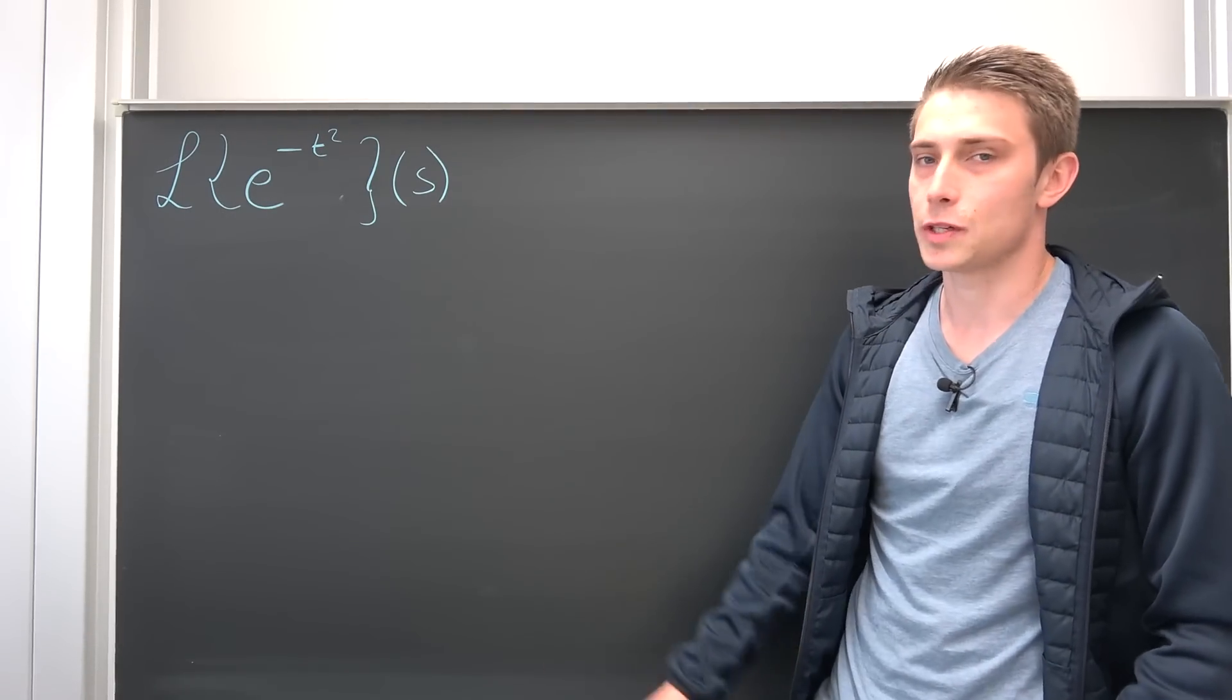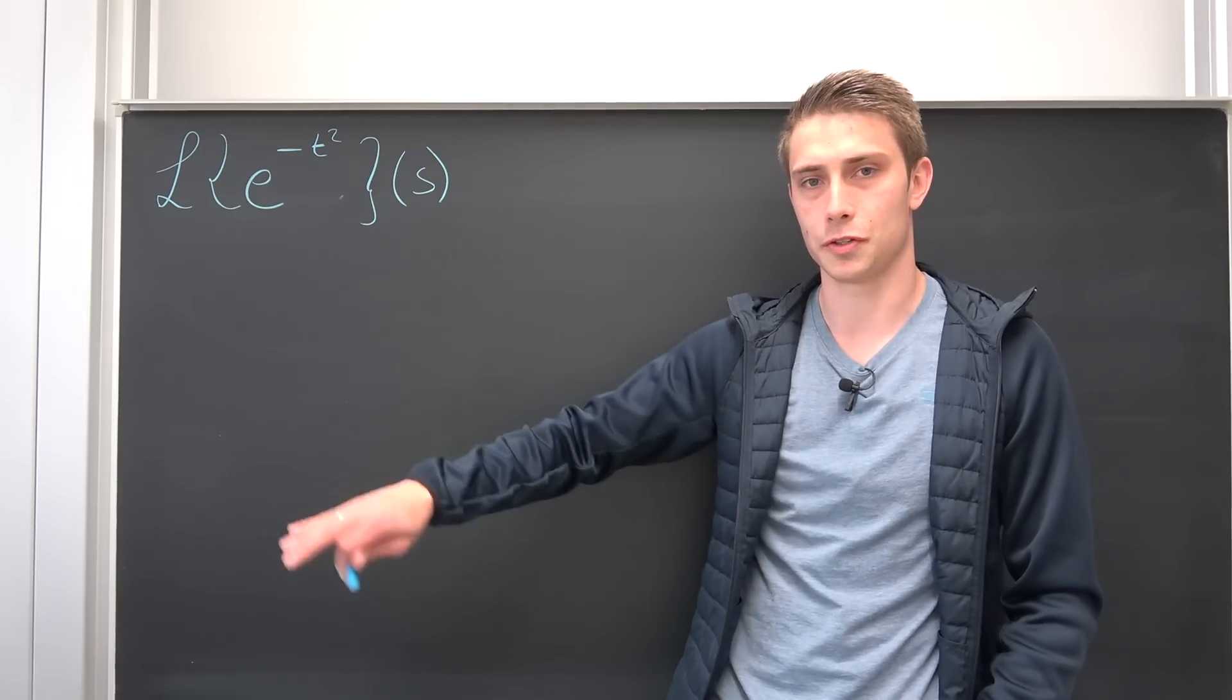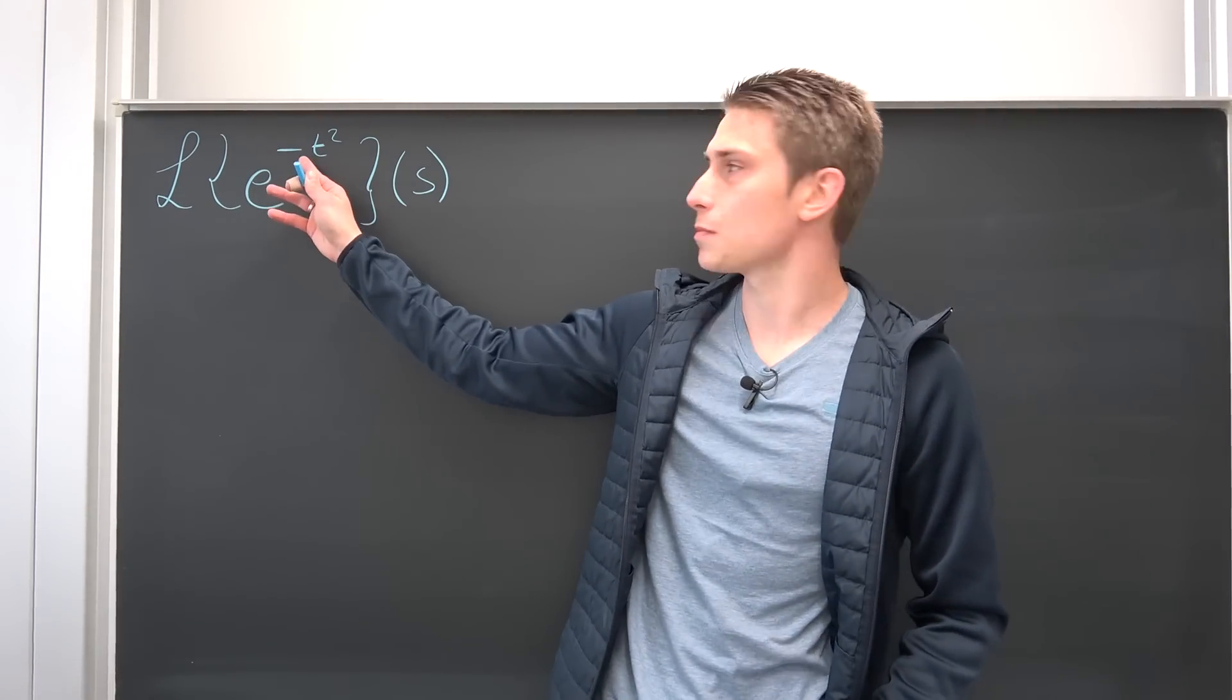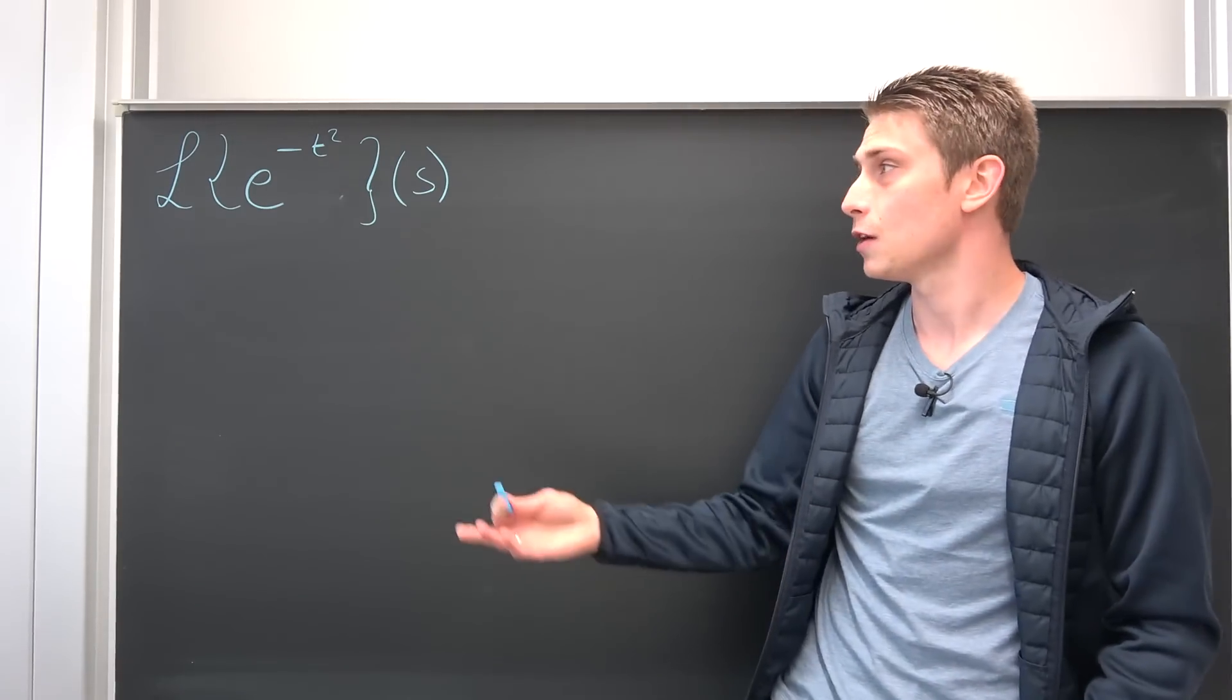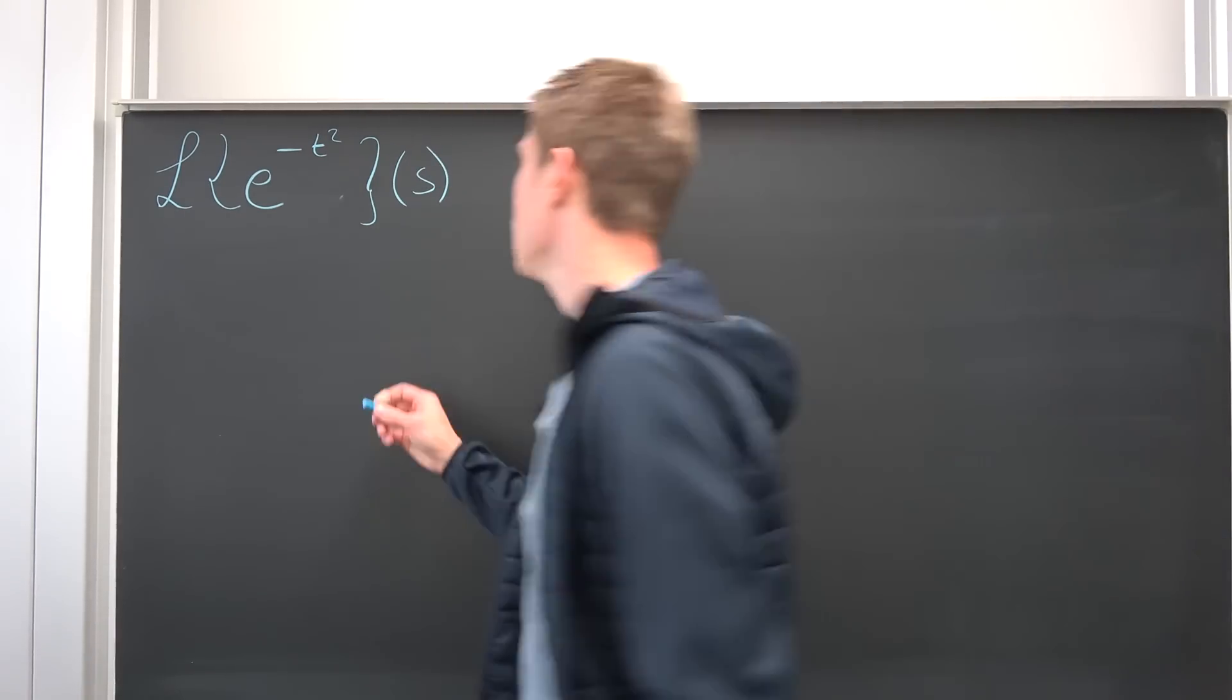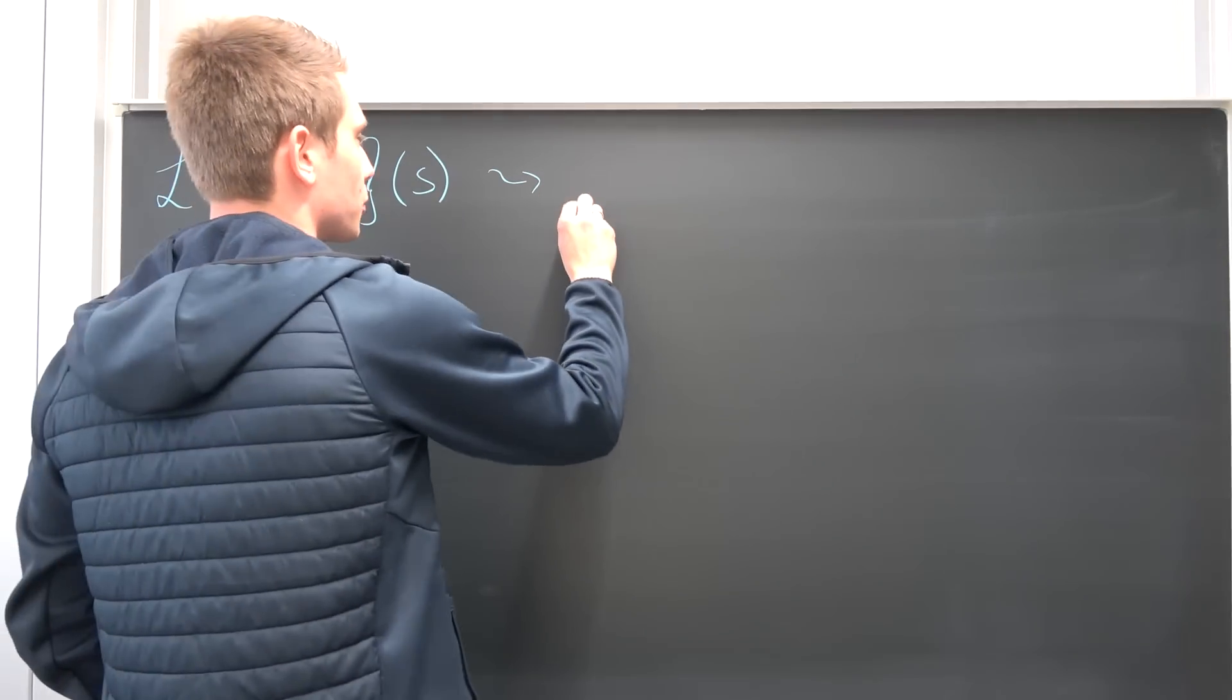So Laplace transform of e to negative t squared, of a Gaussian curve you could say, of a Gaussian bell curve in this case. And this thing actually converges because of the negative sign right here. If you would have a positive t squared then this wouldn't even converge. So let's just use the definition of Laplace transform on this thing and see what we actually get.